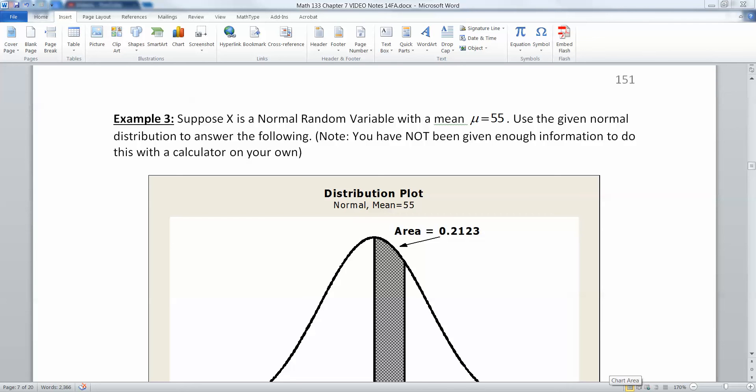Now we're going to take what we've learned about the normal curve and apply it to a couple different problems. Suppose X is a normal random variable with a mean mu equal to 55. Use the given normal distribution to answer the following. Note that you have not been given enough information to do this with a calculator on your own.